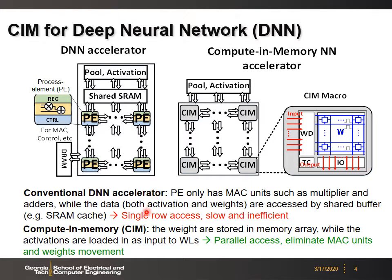As you can see, the data — activations and weights — are stored in the SRAM cache, and we still need to access those data row by row from the cache and load them into the processing elements to do computation. So this is single-row access, which is slow and inefficient.